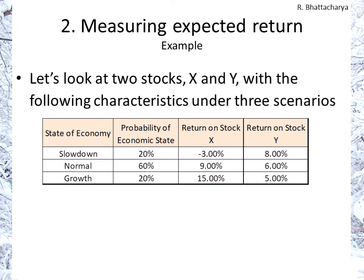Let's look at two stocks, X and Y, with the following characteristics under three scenarios based on the state of the economy: slowdown, normal, and growth. The probabilities assigned are 20%, 60%, and 20%. Under the slowdown scenario, X returns −3% and Y returns 8%. In the normal scenario, X returns 9% and Y returns 6%. In the growth scenario, X returns 15% and Y returns 5%.